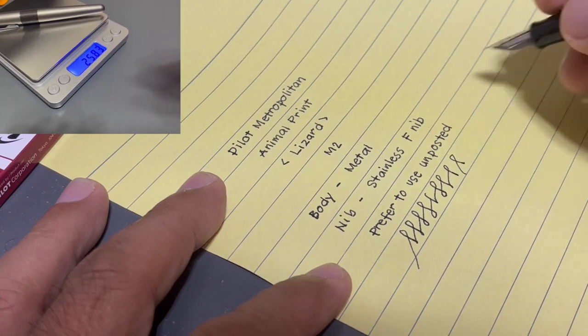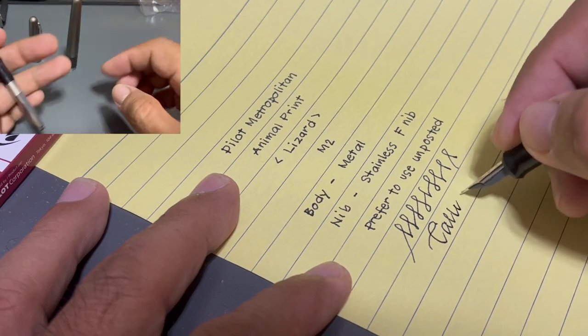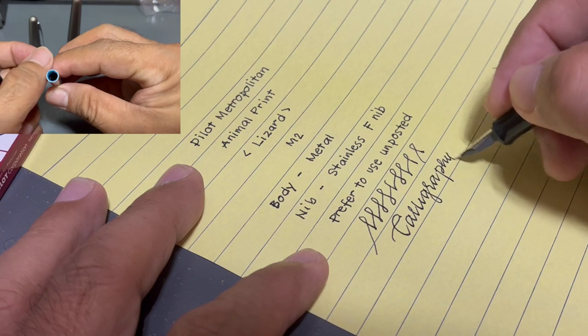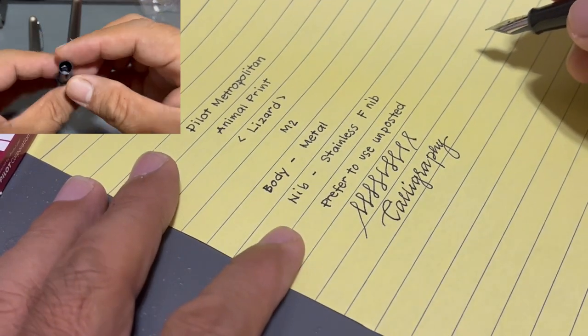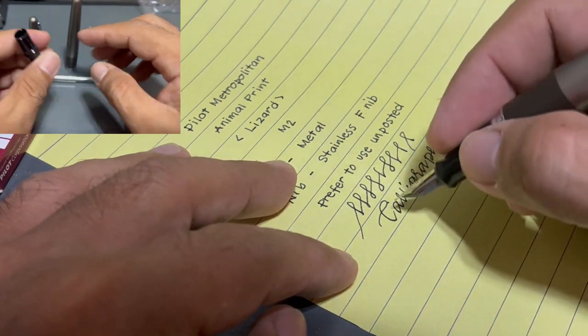Fill mechanism: cartridge slash converter. Cartridge type: proprietary pilot converter. Cap type: snap on compression. Postable: yes. Clip style: spring metal.